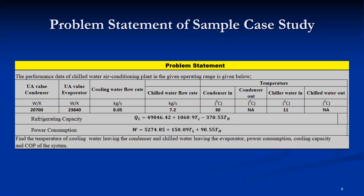Newton-Raphson method is applied here. In this case, there are four unknowns: TWO (cooling water leaving the condenser), TCO (chilled water leaving the evaporator), power consumption, and cooling capacity. Since TL and TH are also unknown, there are effectively four unknowns — TWO, TCO, TH, and TL. In mathematics, four unknowns require four equations.